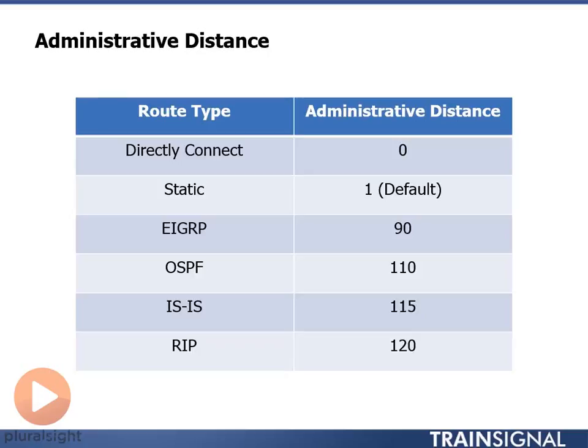There are some other route types I'm not going to cover yet because I don't want to overload you with information, but the next level up is a dynamic route. The dynamic route for EIGRP has an administrative distance of 90. So it is much less trustworthy than a static route, but for this chart it is the most trusted routing protocol as far as adding routes to the routing table.